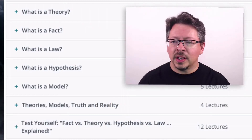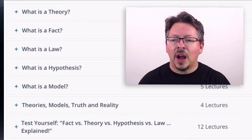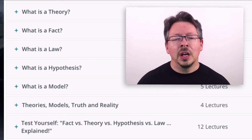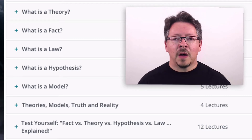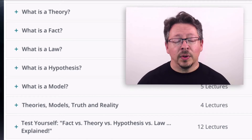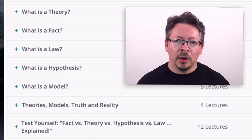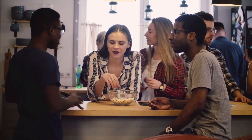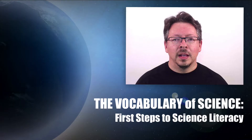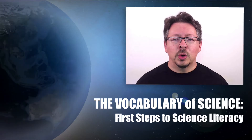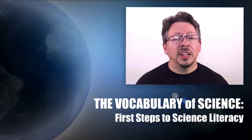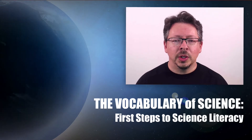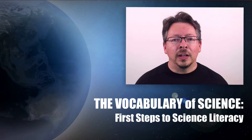The course is broken into sections, with a section devoted to each of five key terms in the vocabulary of science. In the final section, you'll have an opportunity to test your understanding by offering a critical review of a seven-minute video on the vocabulary of science that touches on many of the themes we cover. The ideal student is a science educator or science enthusiast who is passionate about science and wants to improve their understanding of the nature of science. There are no requirements except an interest in learning, and the course doesn't presuppose any special background in science or philosophy of science.